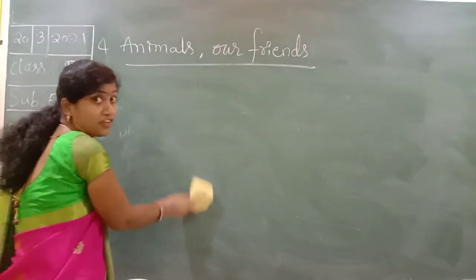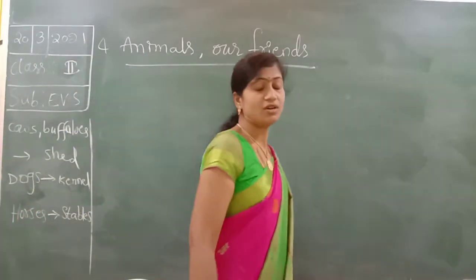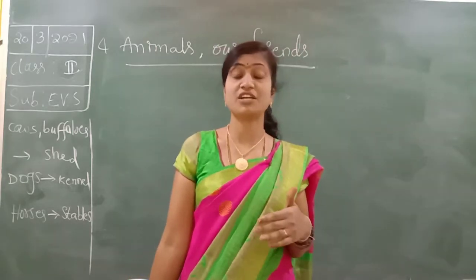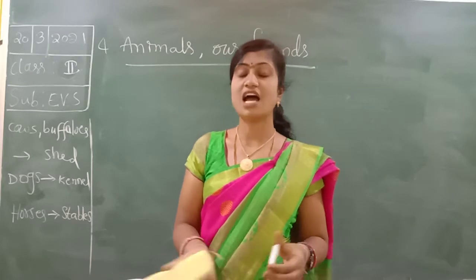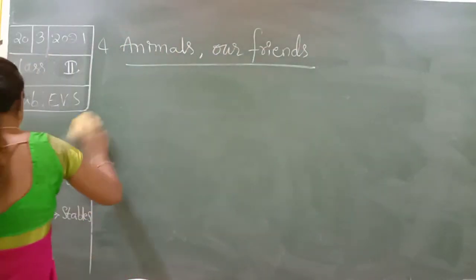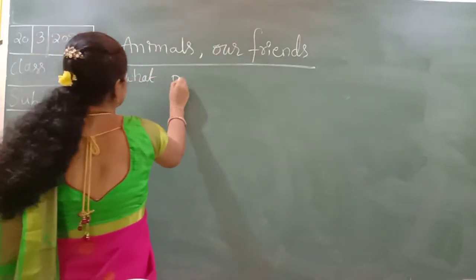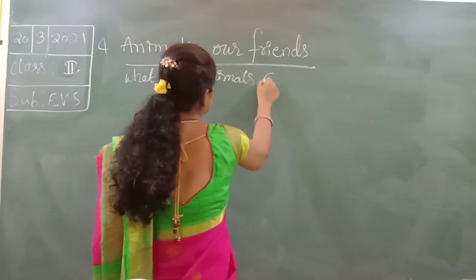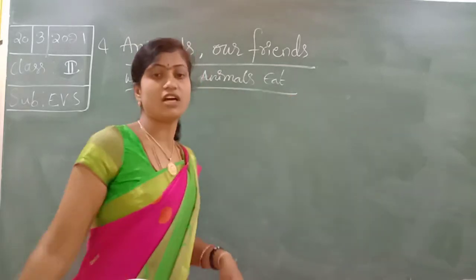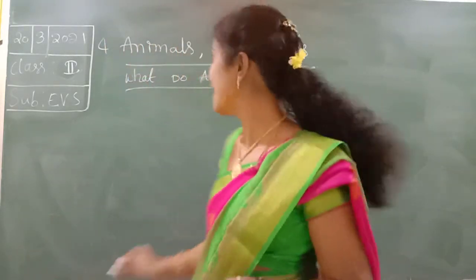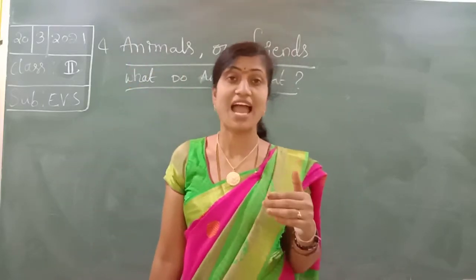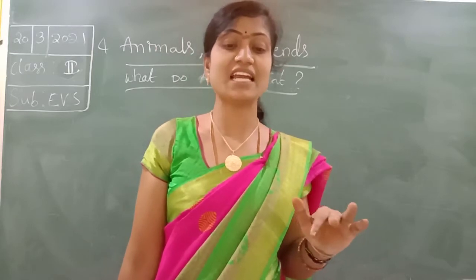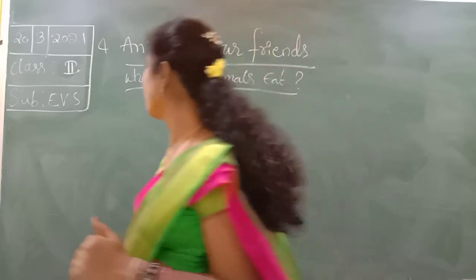All animals need food - we know very well. They eat different types of food. Just as some people eat vegetarian food and some eat non-vegetarian food, animals also have different types of food. We divide them into four types: plant-eating animals, flesh-eating animals, plant and flesh eating animals, and scavengers.